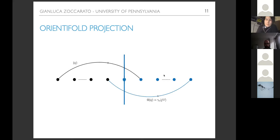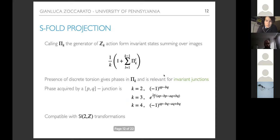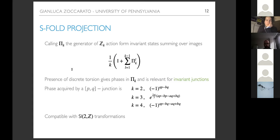For string junctions, it is convenient to have a more geometric picture: the orientation reversal interchanges the orientation of strings and maps the endpoint of a string to a different brane. There can be some phases gamma_omega — for the Sp projection this is always one; for the SO projection it can be minus one depending on which strings appear, which can lead to some strings being projected out. For the S-fold generalization, we call pi_K the generator of the C_K action. We form invariant junctions by summing over the various images. The operator pi_K can have phases that are the manifestation of discrete torsion, with the phase acquired by a (p,q) junction determined by the discrete torsional fluxes A and B.